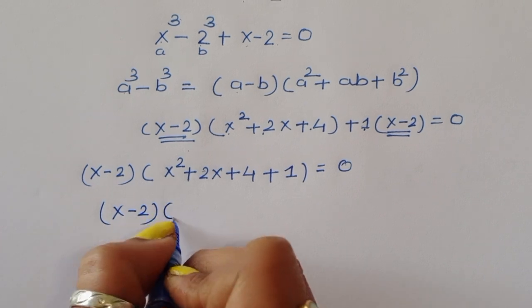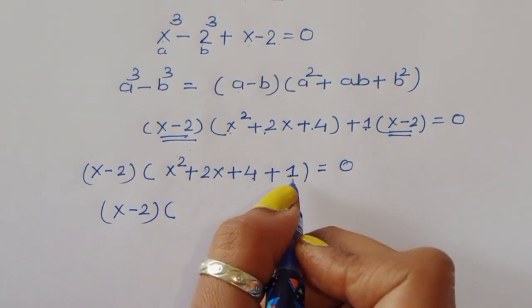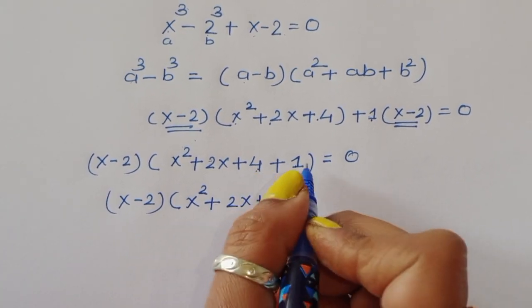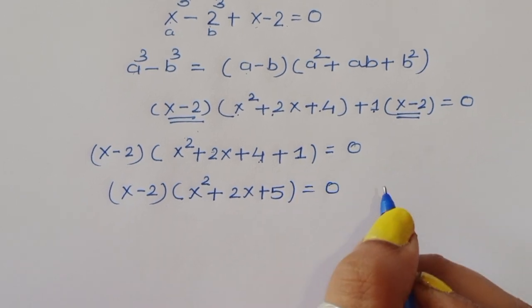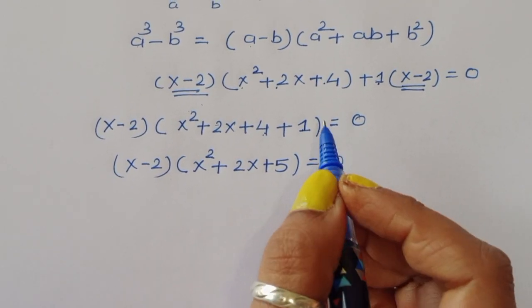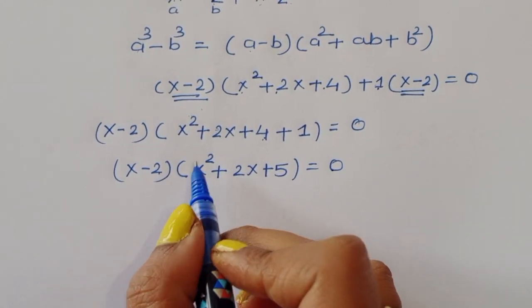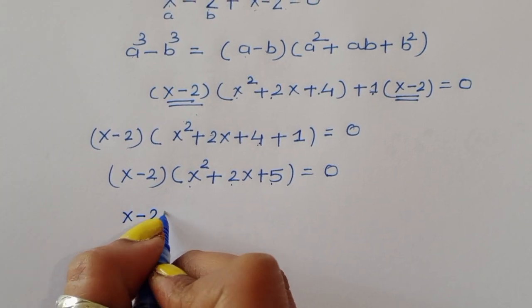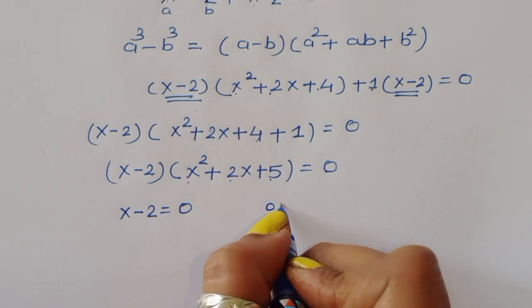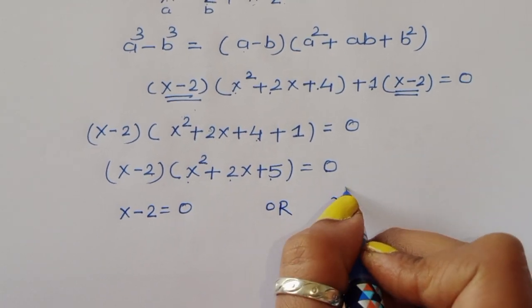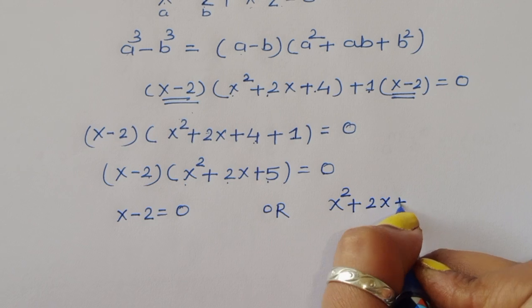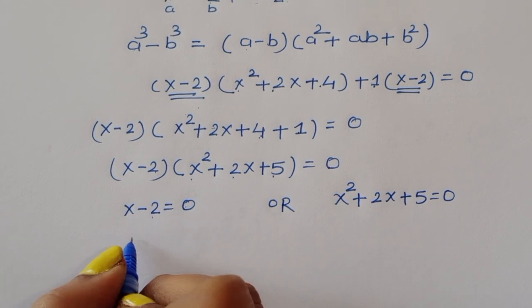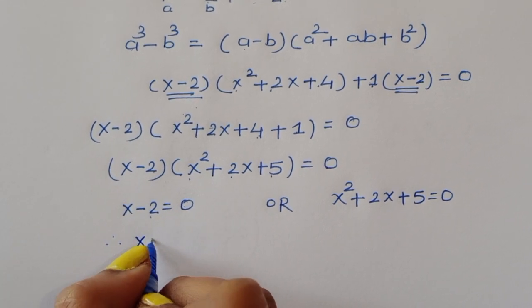Taking x minus 2 common, the remaining factor is x squared plus 2x plus 4 plus 1, which gives x squared plus 2x plus 5. So we have two equations: first, x minus 2 is equal to zero; and second, x squared plus 2x plus 5 is equal to zero.